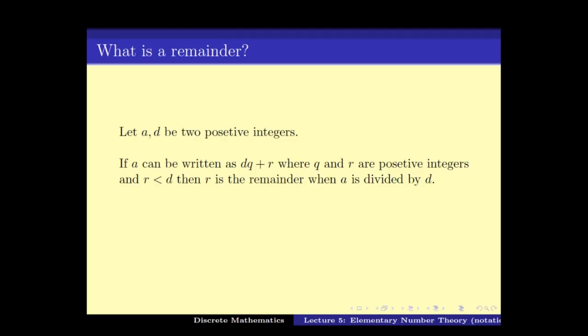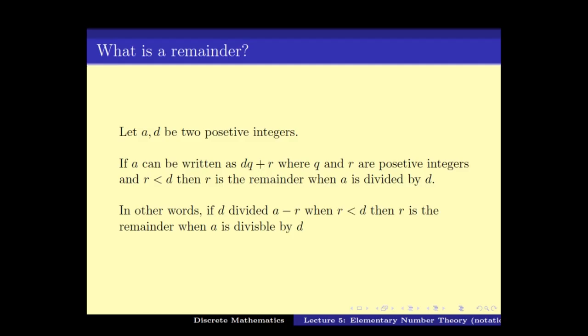If r equals 0 — that means if the remainder is 0 — then a equals d times q where q is a positive integer; in other words, a is divisible by d. Thus if d divides a, the remainder is 0; else we get a remainder that is less than d. One more observation: since a can be written as dq plus r, that means a minus r is dq, which also means that d divides a minus r.